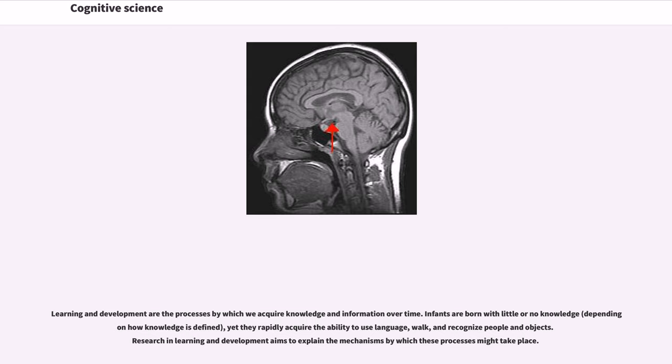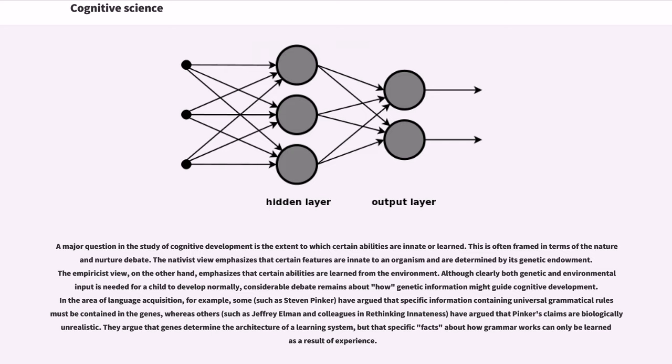Learning and development are the processes by which we acquire knowledge and information over time. Infants are born with little or no knowledge, depending on how knowledge is defined, yet they rapidly acquire the ability to use language, walk, and recognize people and objects. Research in learning and development aims to explain the mechanisms by which these processes might take place. A major question in the study of cognitive development is the extent to which certain abilities are innate or learned. This is often framed in terms of the nature and nurture debate. The nativist view emphasizes that certain features are innate to an organism and are determined by its genetic endowment. The empiricist view, on the other hand, emphasizes that certain abilities are learned from the environment.